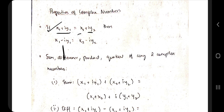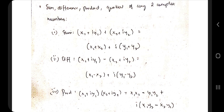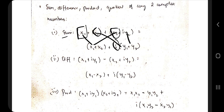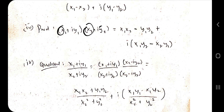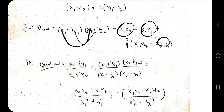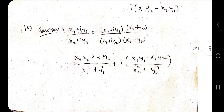The sum, difference, product, and quotient of two complex numbers are as follows. For the sum, take x₁ + x₂ on one side and i(y₁ + y₂) on the other. For multiplication, multiply real terms x₁x₂ and y₁y₂ and subtract, then write i times the cross-multiplication x₁y₂ + x₂y₁. For the quotient, normalize the denominator by multiplying by x₂ − iy₂ in both numerator and denominator to get the real and imaginary parts.